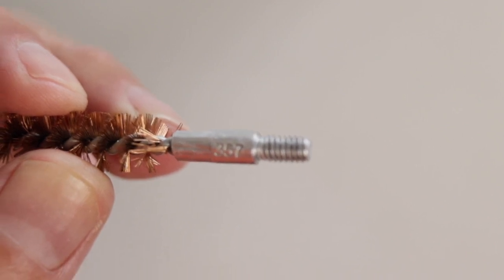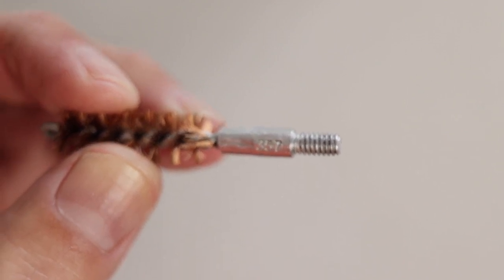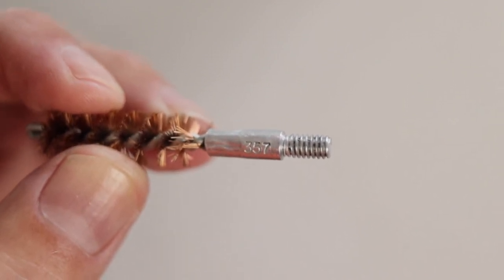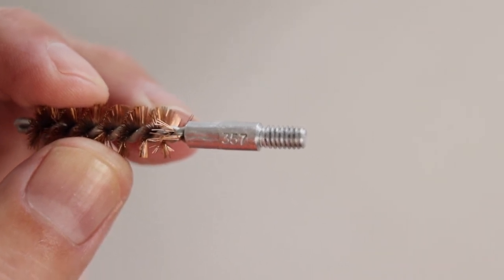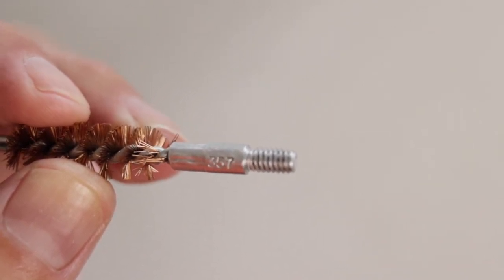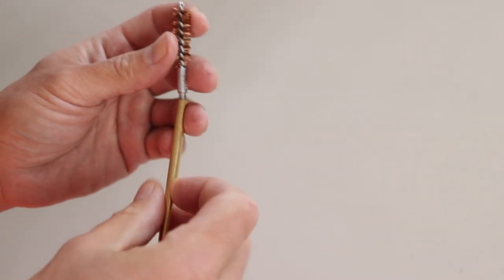Grab your bore brush. Make sure it's bronze or nylon. Don't use steel or anything like that. Make sure it's the correct caliber. On the side, it's going to say .357 like this one, 9mm, .38, or .380. Attach it to your cleaning rod.